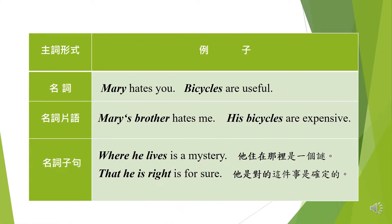代名詞做主詞時必須要用主格。像him、her等受格的代名詞不可以做主詞。圖表中有三個主詞形式，第一種是名詞，我們來看例子：Mary hates you。